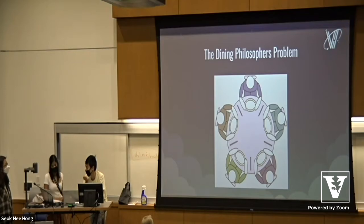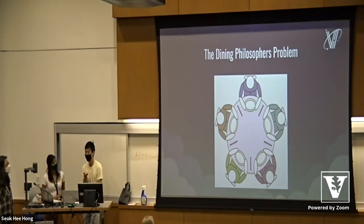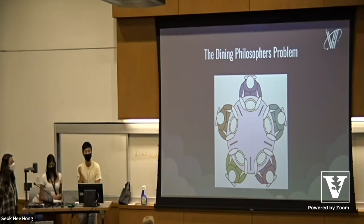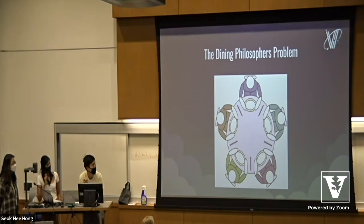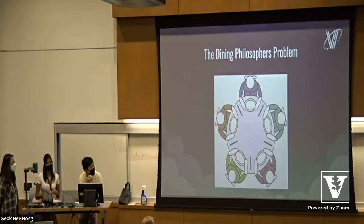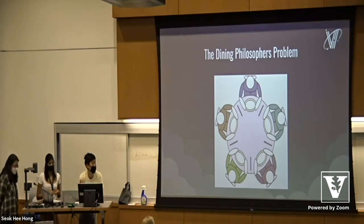In order to eat, there are some conditions. As you can see, there is basically one fork placed in between each philosopher. And in order to eat, the philosopher has to have both of the forks — they have to have the fork to their left and right. What this implies is that not every philosopher can eat at the same time. So the question is: how can we design an algorithm for each philosopher so that they all get to eat at some point and none of them starve?